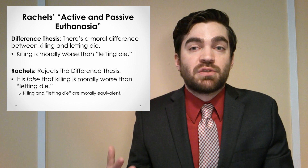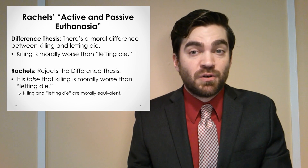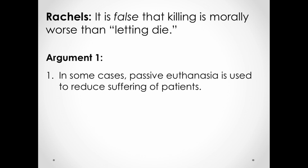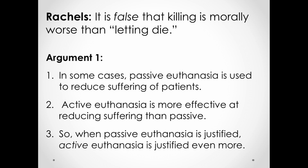To defend this view, Rachels gives three main arguments. We're only going to talk about the first and the third. Rachels' first argument goes something like this: In some cases, passive euthanasia is used to reduce the suffering of patients. Active euthanasia is more effective at reducing suffering than passive euthanasia. So when passive euthanasia is justified, active euthanasia is justified even more. If the goal of passive euthanasia is to reduce patient suffering, then active euthanasia does a better job of that — rather than having an individual waiting around to die of natural causes, active euthanasia allows their life to be ended immediately.